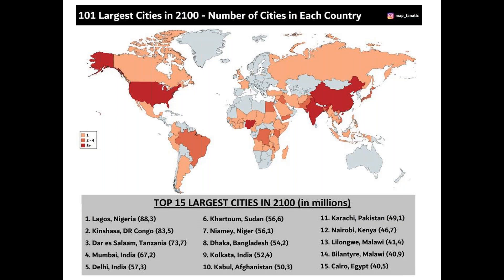When we think about inequality, about three quarters of the world's cities have greater income inequality today than they did two decades ago. Researchers at the University of Toronto are projecting that two African cities — Lagos and Kinshasa — will have more than 80 million people each by the end of this century. They're projecting another half dozen cities with more than 50 million people, including Dar es Salaam, Mumbai, Delhi, Khartoum, Dhaka, Calcutta, and Kabul. The enormity of the challenge of making a city of more than 50 million people work is just mind-boggling.